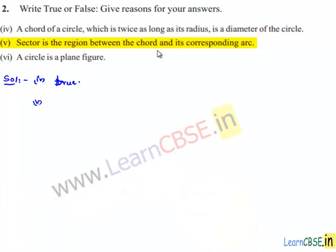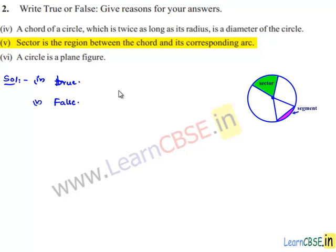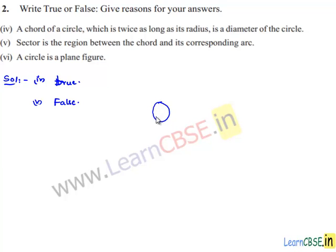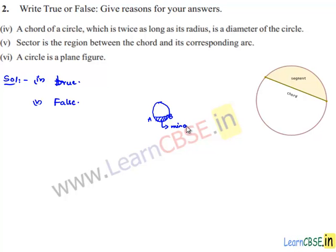Moving on to the fifth bit: sector is the region between a chord and its corresponding arc. That is false. A segment is the region between a chord and either of its arcs, not a sector. If we consider a circle with chord AB, the region between AB and the arc is called the minor segment, and the other remaining part is known as the major segment.